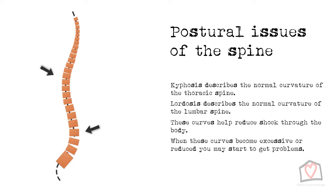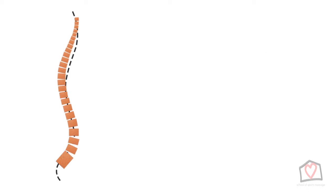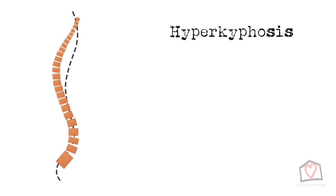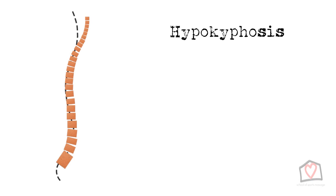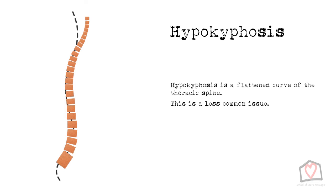Let's have a look at the dysfunctions. You have hyperkyphosis — this is an excessive curve of the thoracic spine. This is a very common issue and can often be caused by working excessively at computers. We tend to poke our heads forward and look at the screen, creating a slumped posture. Then there is hypokyphosis. This is when you have a flattened curvature of the thoracic spine. This isn't such a common occurrence.